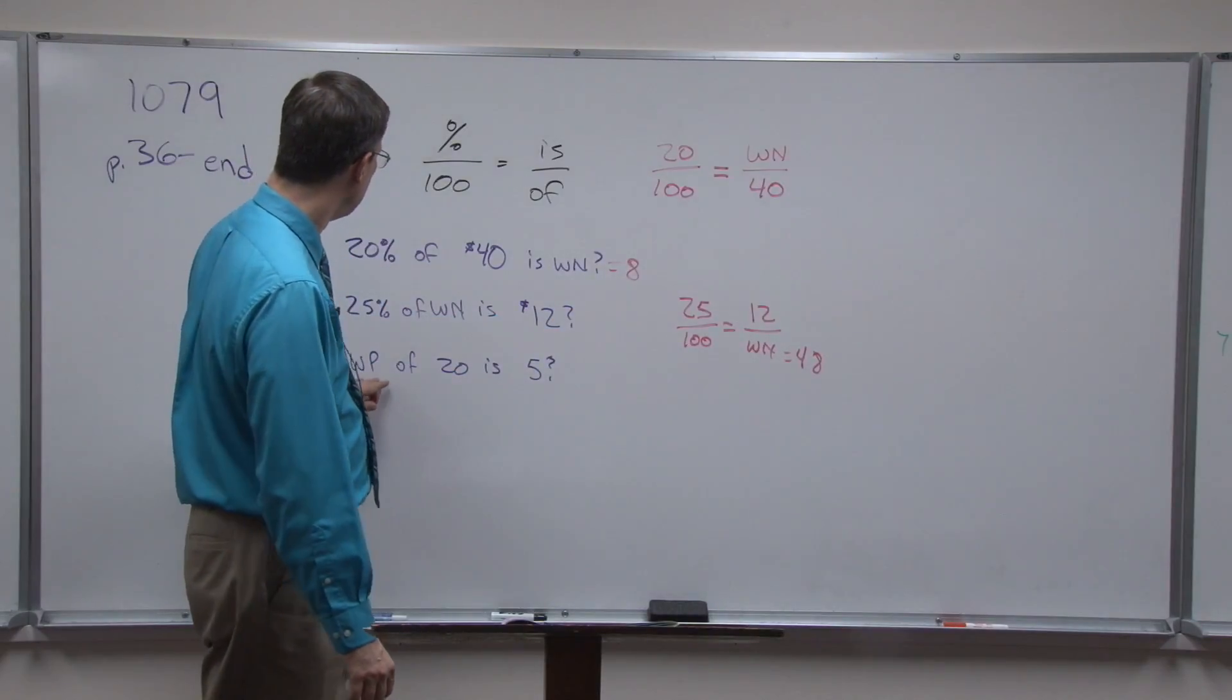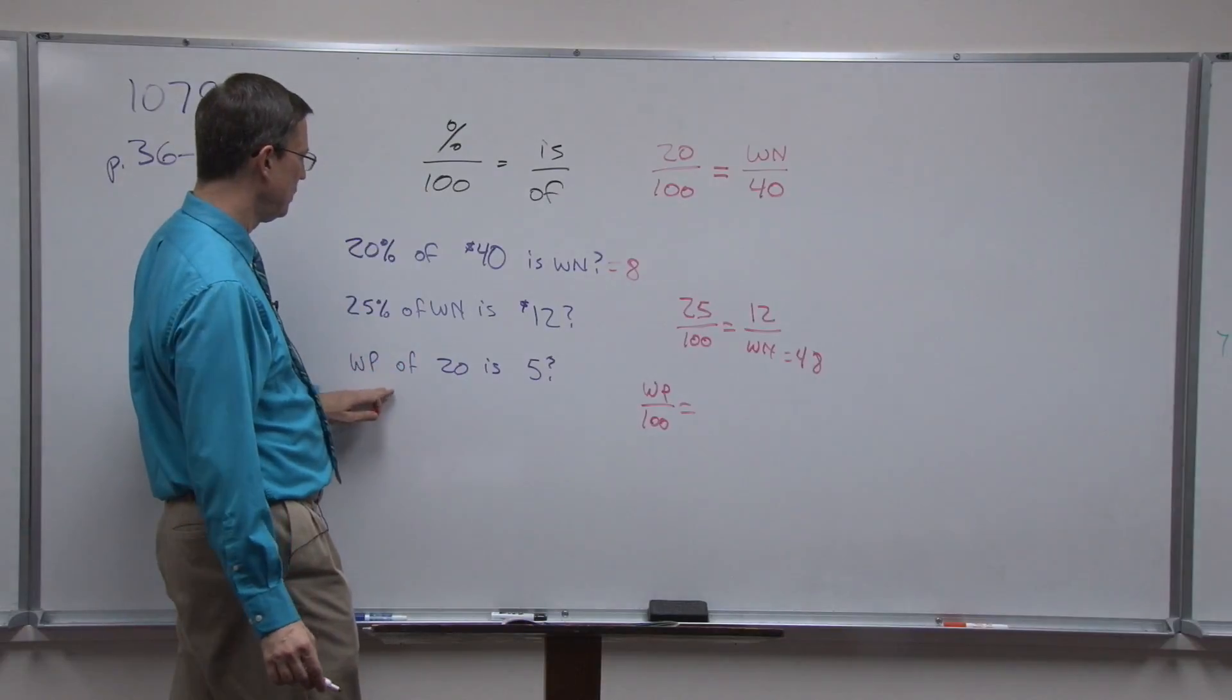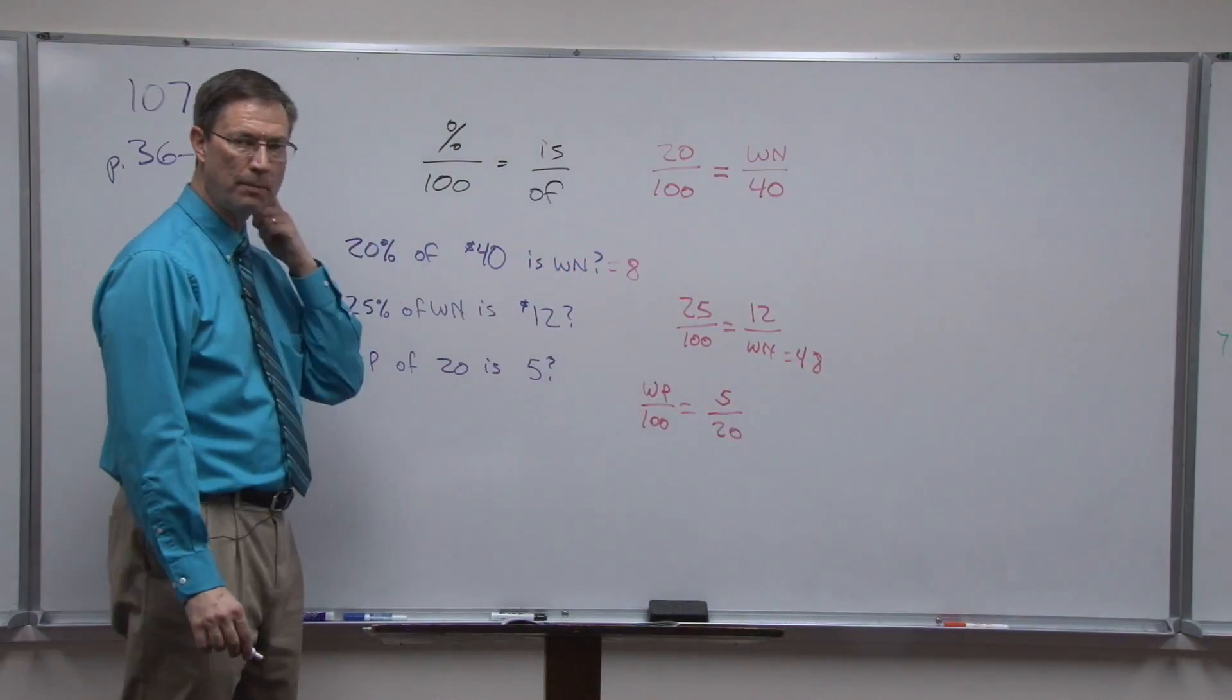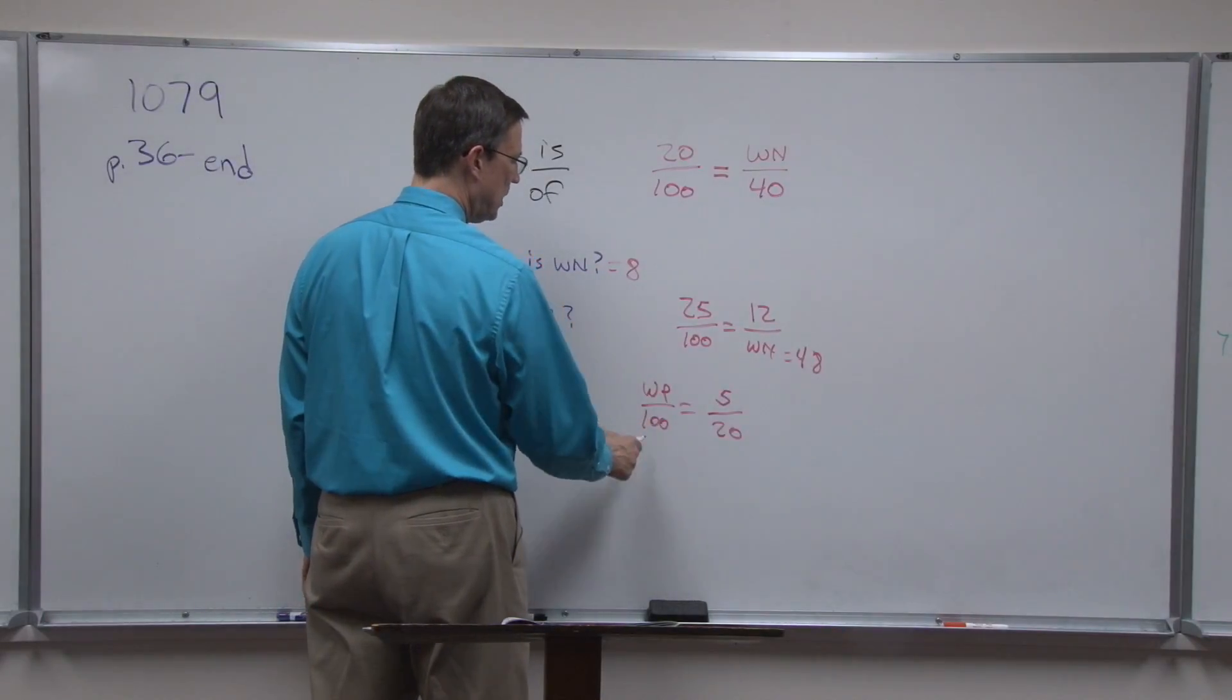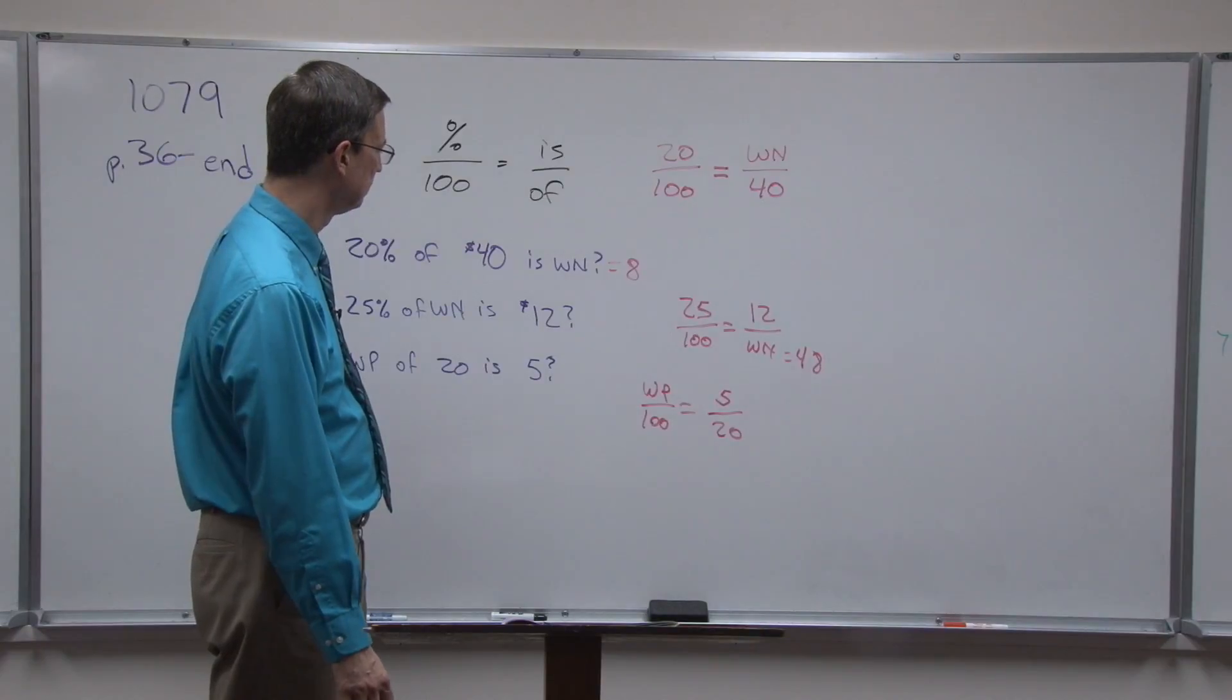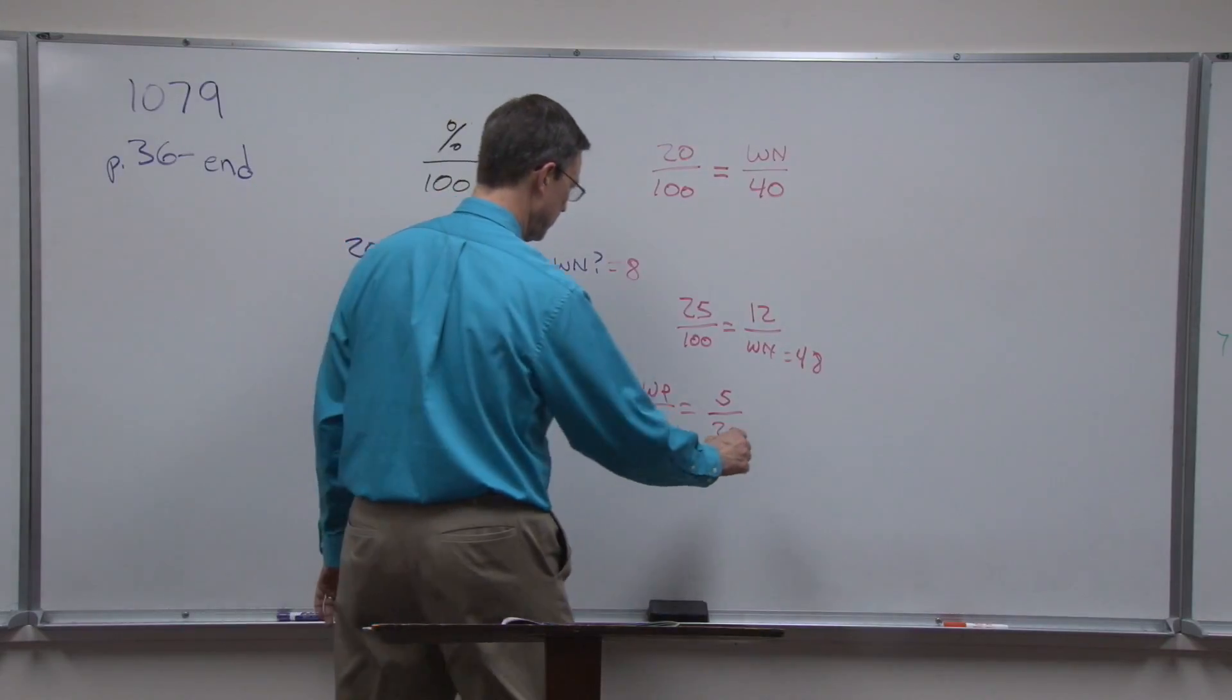All right, now I'm going to figure out the missing percent. So WP over 100 equals what percent of 20 is 5. So of 20 goes down here, 5 goes on the top. And then I would cross multiply. 5 times 100 which would be 500 and divide by 20. And the answer would work out to be, why did I just have brain freeze, 5 over 20, 25 percent, okay.